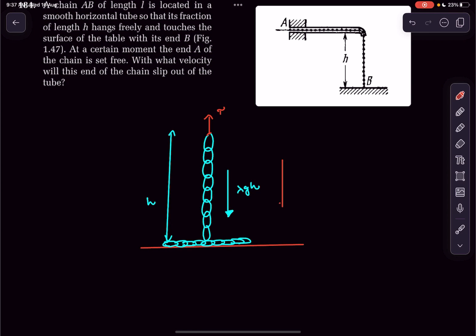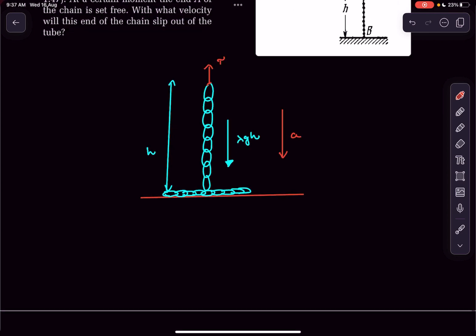Let's say this chain's acceleration is a downwards. Then λgh - T = λh × a.